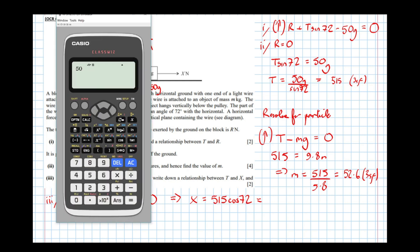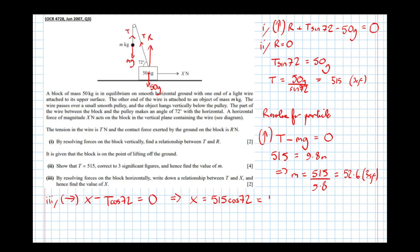So equals 515 cos 72 equals 159 newtons.